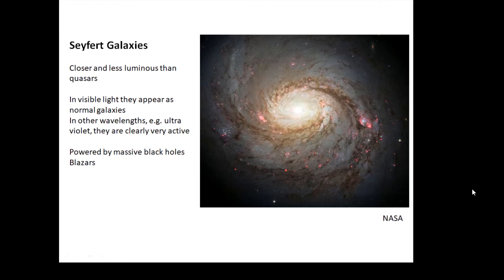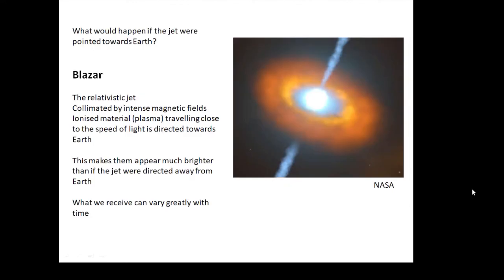We talked about this jet and radiation being given off. What would happen if it were pointed towards Earth? If it's pointed towards Earth, that is a blazar. The fact that the jet and radiation is heading towards Earth makes them appear much brighter than if the jet were pointing away, like a lighthouse.